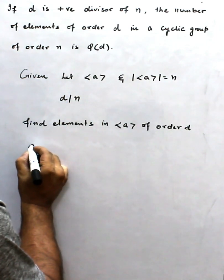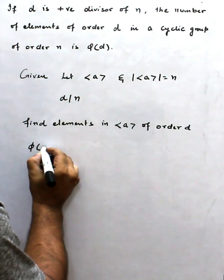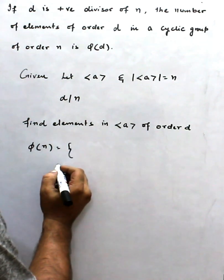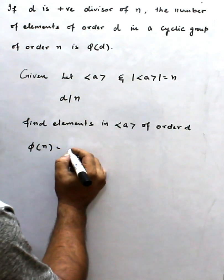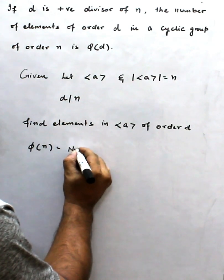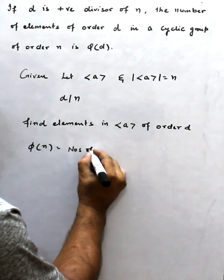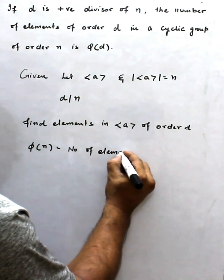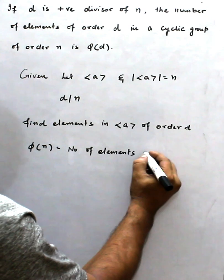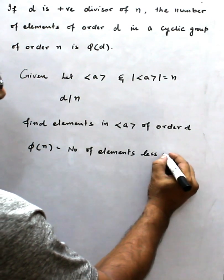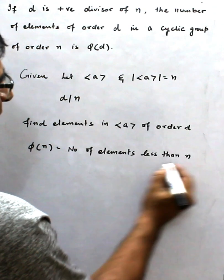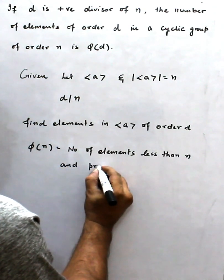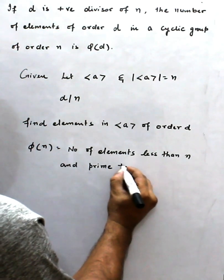What is φ(d)? First, what is φ(d)? I'll define φ(n). φ(n) is the number of elements less than n and prime to n.